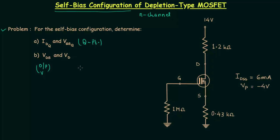Let's first see what parameters are given in the problem. Resistance Rd is equal to 1.2 kΩ, resistance Rs is equal to 0.43 kΩ, and resistance Rg is equal to 1 MΩ. IDSS, the saturated drain current, is equal to 6 mA and the pinch-off voltage VP is equal to -4 V. IDQ is the drain current ID and VGSQ is the input voltage VGS.